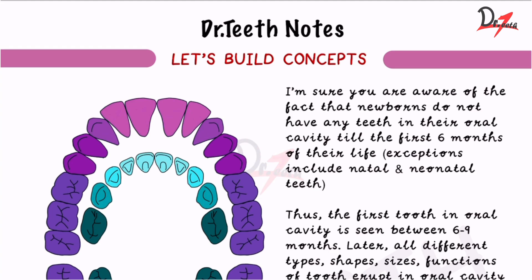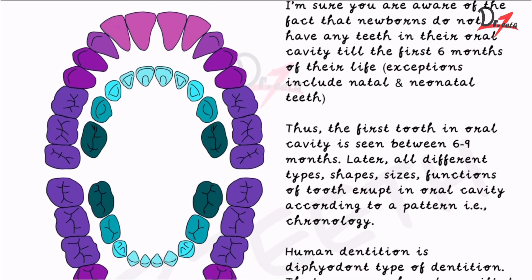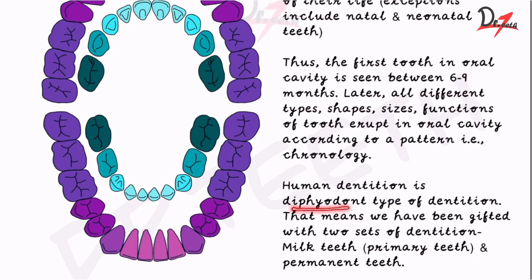That pattern is called the chronology. So if somebody asks you what is the chronology of deciduous teeth — which are the milk teeth — you have to tell the pattern in which they erupt, meaning which tooth comes into the oral cavity first and which tooth comes later. Now, human dentition is diphyodont type of dentition.